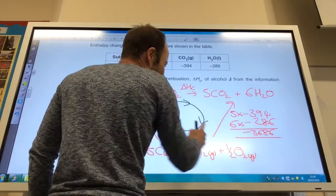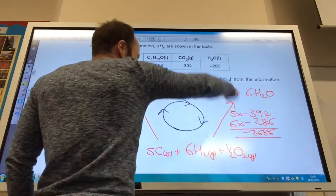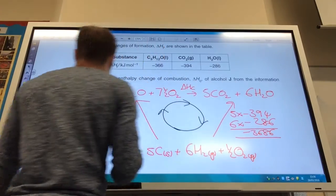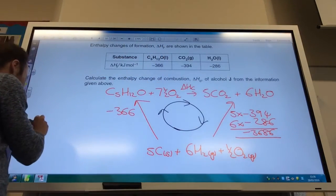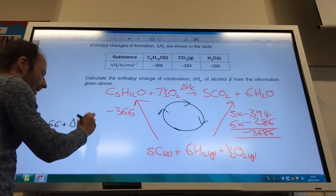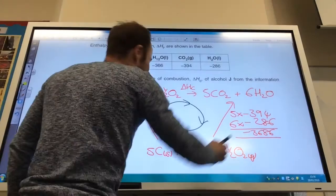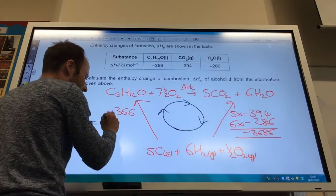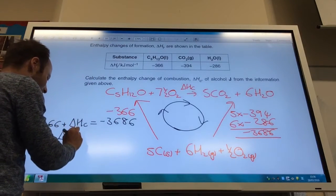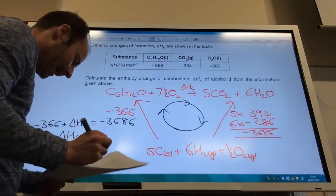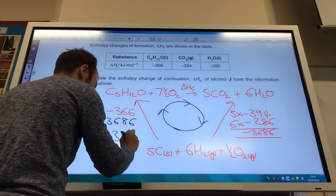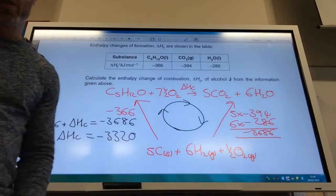That arrow is going against this arrow here. So, think of it as clockwise going around. These go the right way. That's going the opposite way. So, minus 366 plus delta Hc is equal to the arrow that goes the other way, 3686. You rearrange that equation, and delta Hc equals minus 3320 kilojoules per mole.